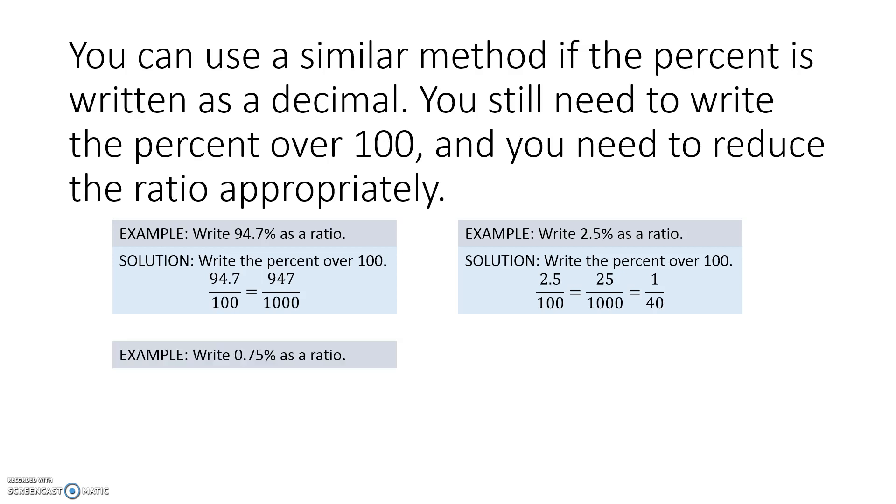What if it's just a decimal? 0.75%. Same thing. Write it over 100. Move the decimal appropriately. Notice we had two decimal places in the numerator, so we have to move both decimals two places to the right. This gives us 75 over 10,000. And that can be reduced to 3 to 400.